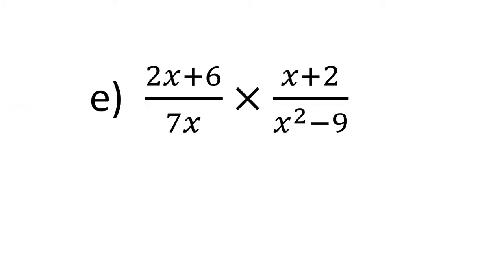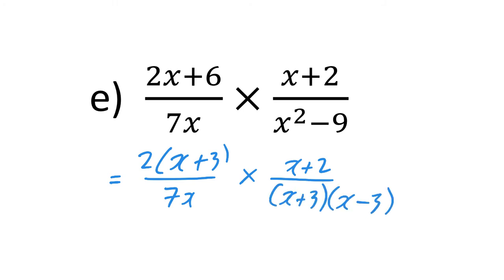Okay next example. Factorize everything here. Top line on the left hand side is 2 times (X plus 3) over 7X, and then we've got (X plus 2), and the bottom line here is a difference of two squares, so you have (X plus 3)(X minus 3). And then a nice neat line through your (X plus 3) as it can cancel, and that's as good as we can go.